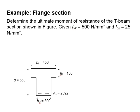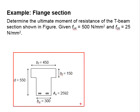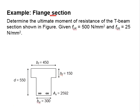Let us try another example for the flange sections. This time, you are given the amount of reinforcement bar equals to 2592 mm². With the sections given here, you are asked to determine the moment resistance of the section.